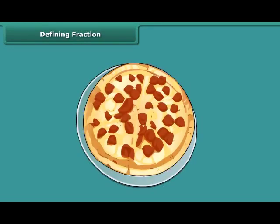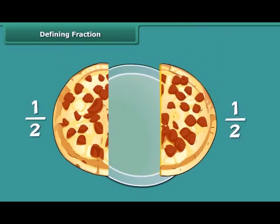A fraction indicates part of a whole thing. 1 upon 2 means that one whole thing is divided into two equal parts, and one part out of these two parts is taken.